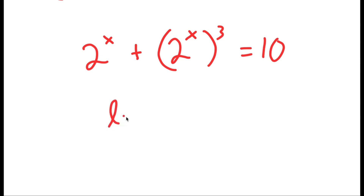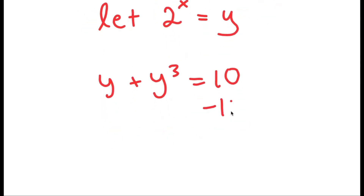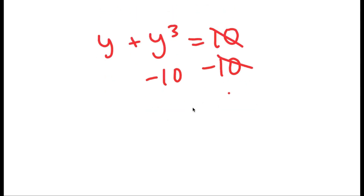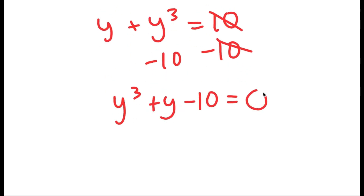From here, I'm going to let 2 to the power of x equal to the variable y. So now I get y plus y to the power of 3 is equal to 10. And if I subtract 10 on both sides, I get y to the power of 3 plus y minus 10 is equal to 0.